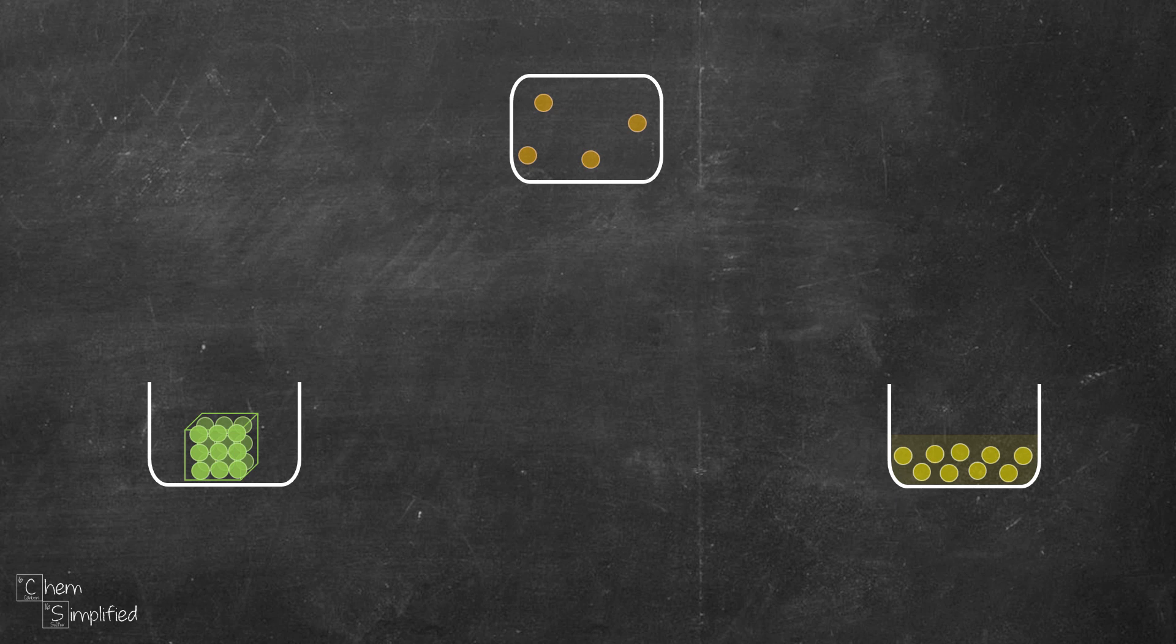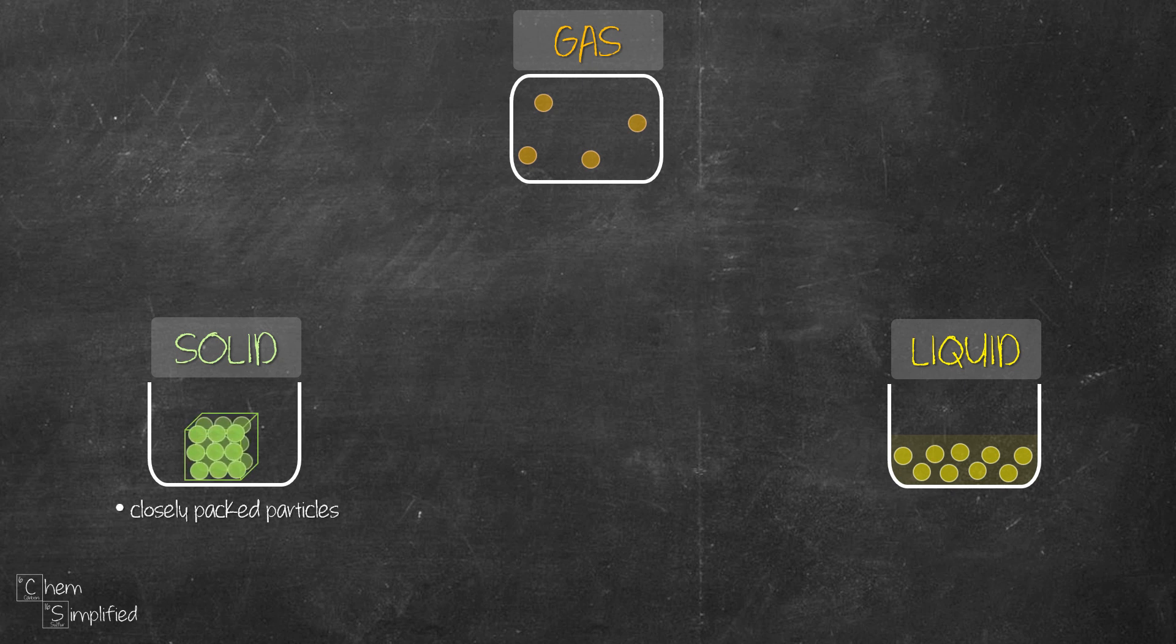The three states of matter are solid, liquid, and gas. The particles in solid states are packed closely together. They are arranged in an orderly manner right next to each other. Because of that, solid has fixed shape and fixed volume. That means when solid is placed in a container, it will not take on the shape of the container. Instead, it will retain its own shape and volume. Since the particles are so closely packed, solid can't be compressed.